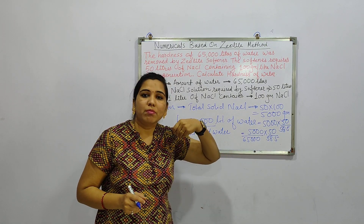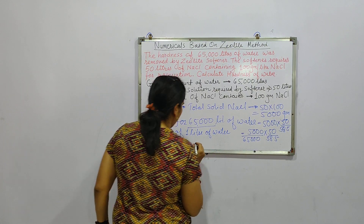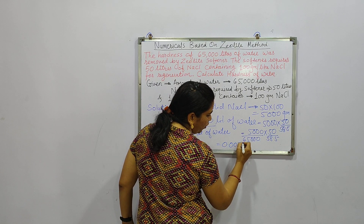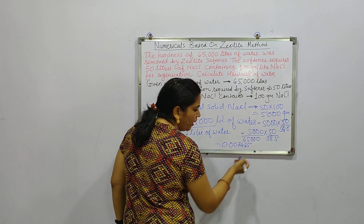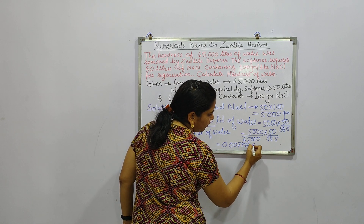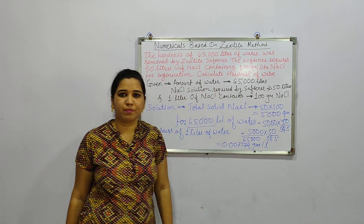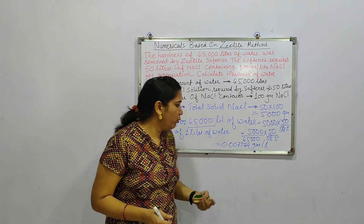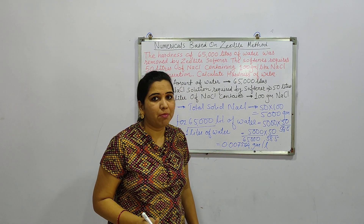From that calculation, hardness in grams per liter comes out to approximately 0.007464 grams per liter. So the hardness present in the water is 0.007564 grams per liter.